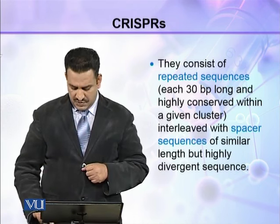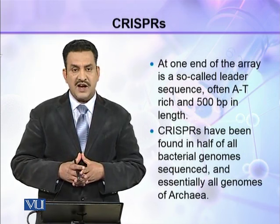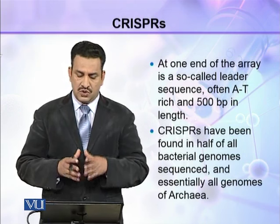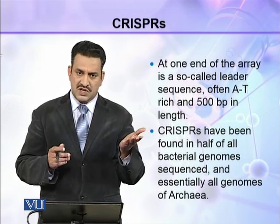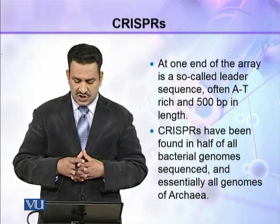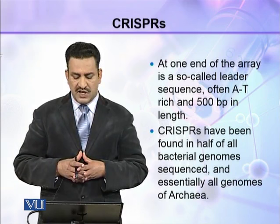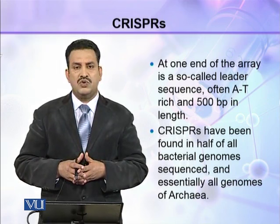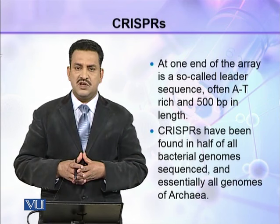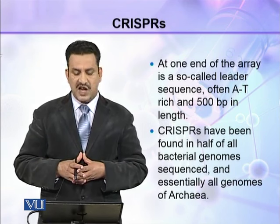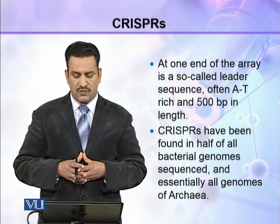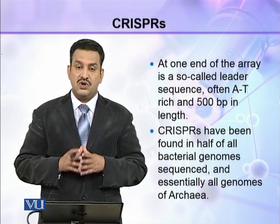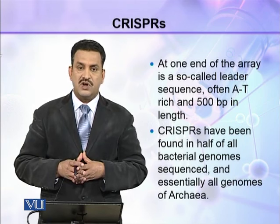At one end of the CRISPR array is a so-called leader sequence, which is often an adenine-thymine-rich sequence and is about 500 base pairs in length. CRISPRs have been found in half of all bacterial genomes and almost all the genomes of Archaea.